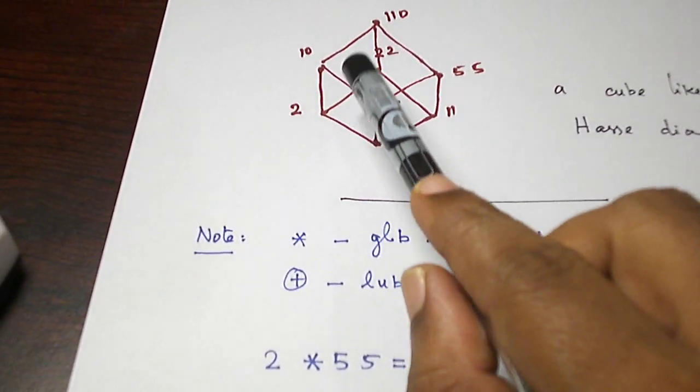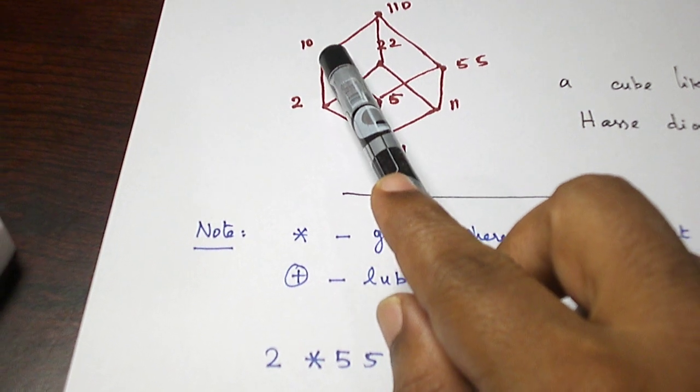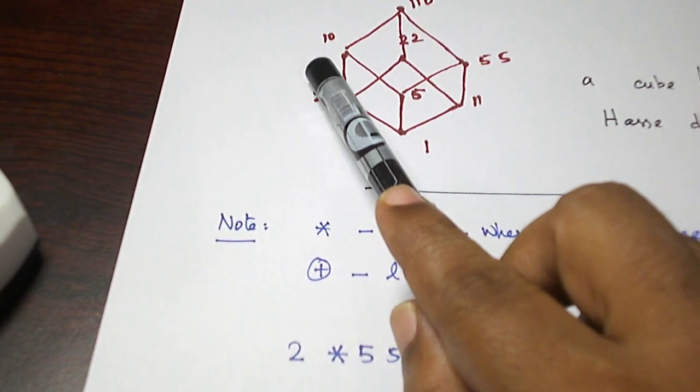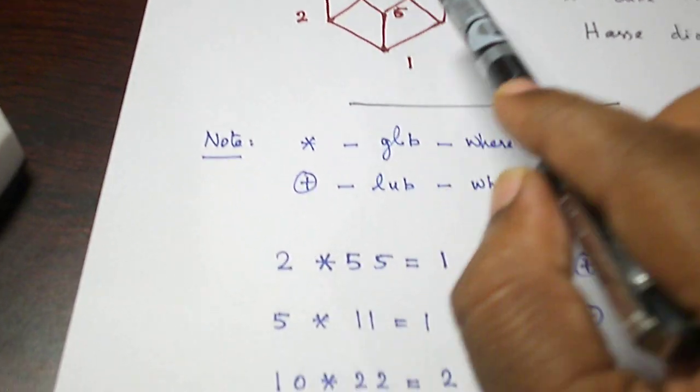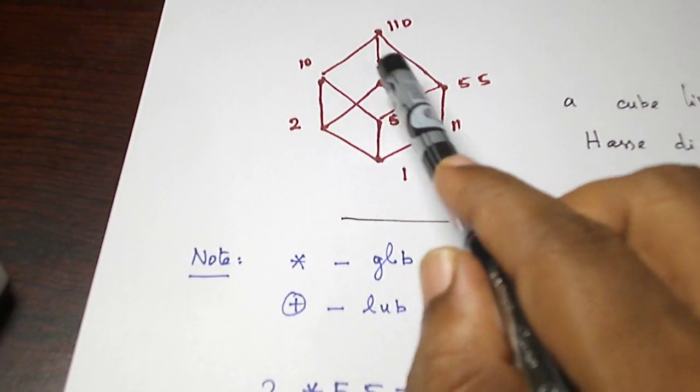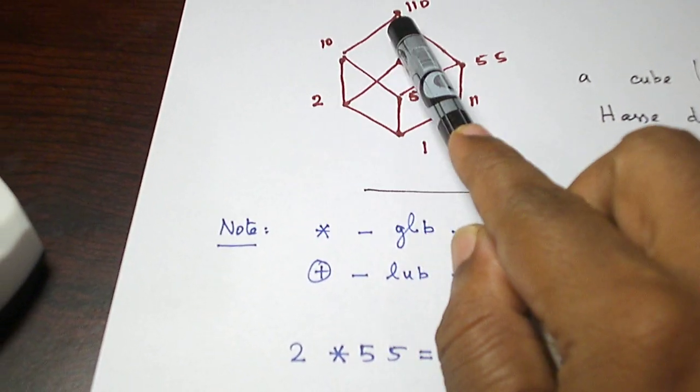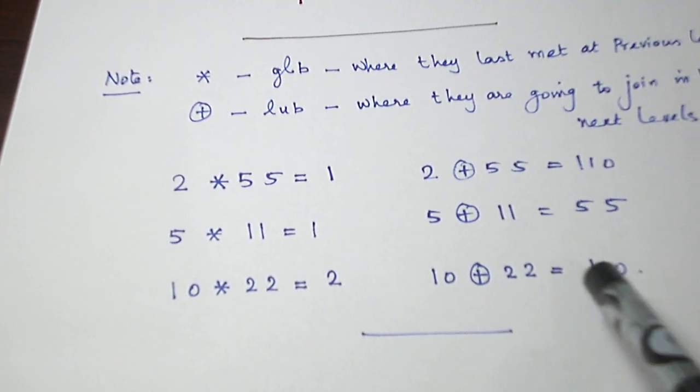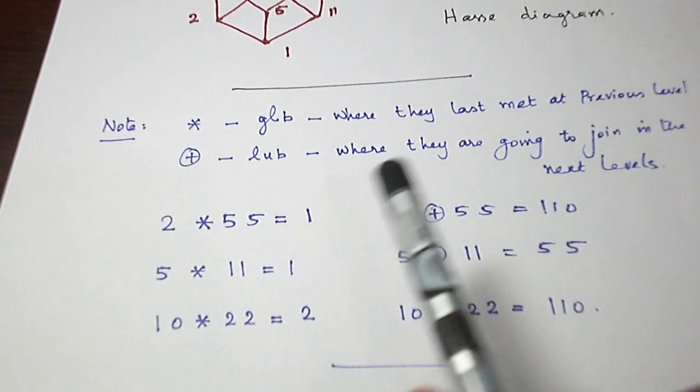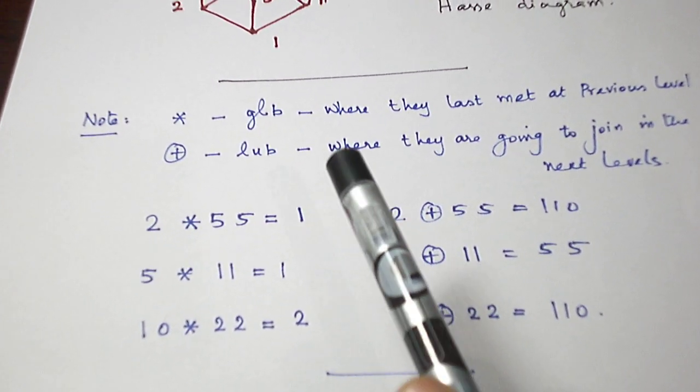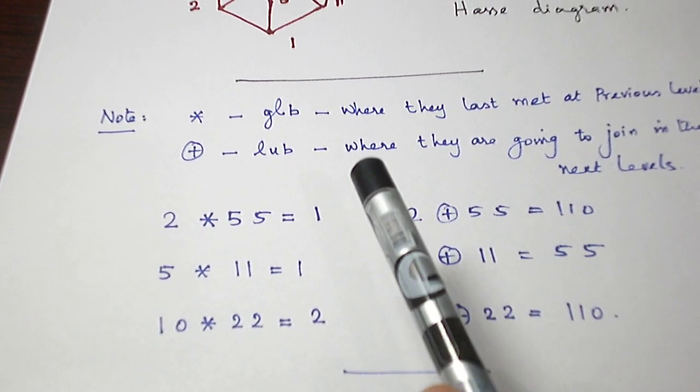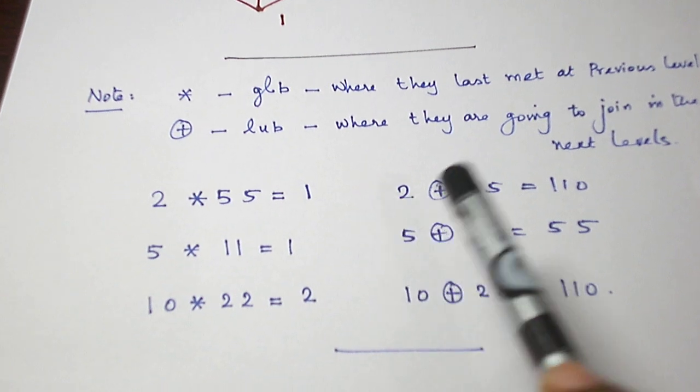And, 10 and 22 if you take. 10 and 22 last met at 2, so 10 star 22 is 2. 10 and 22 are going to join at 110, so 10 plus 22 is 110. So, these are few examples for the star and plus. That is, meet and join operations.